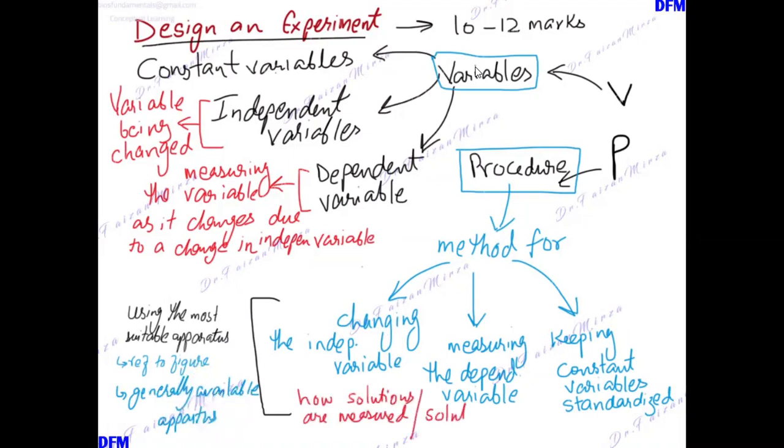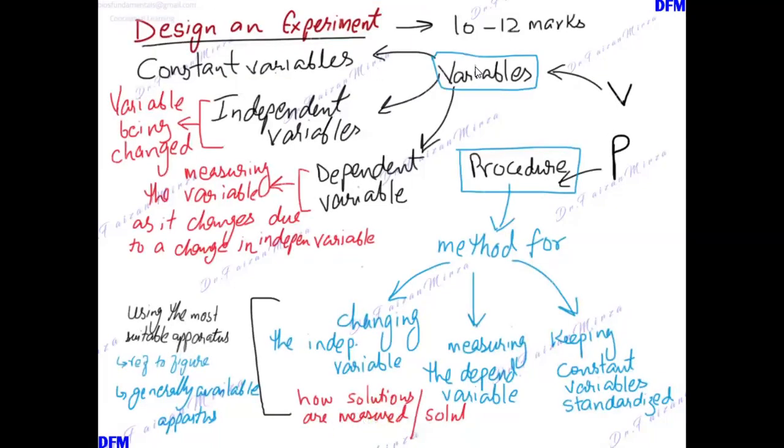For example, weighing balances, volumetric flasks, thermostatically controlled equipment, etc. For any experiment this will vary from case to case. Whatever apparatus is useful for that particular experiment needs to be stated, including how solutions are measured and how you are varying the concentration. Next comes safety.